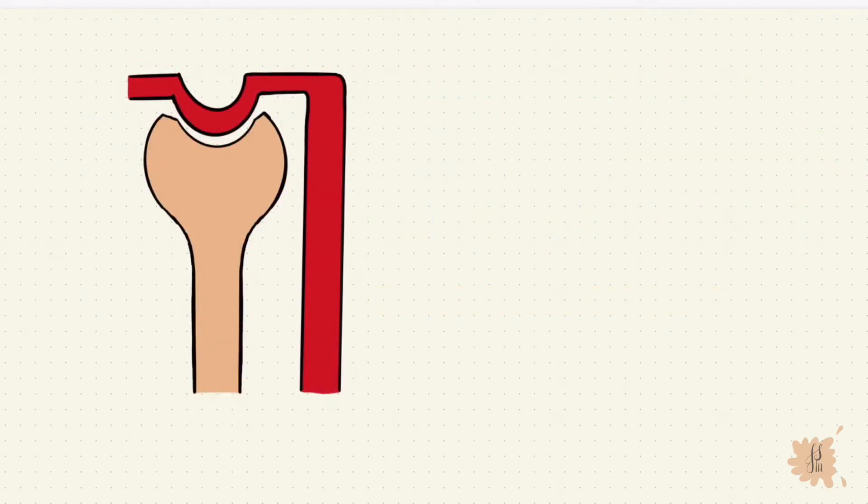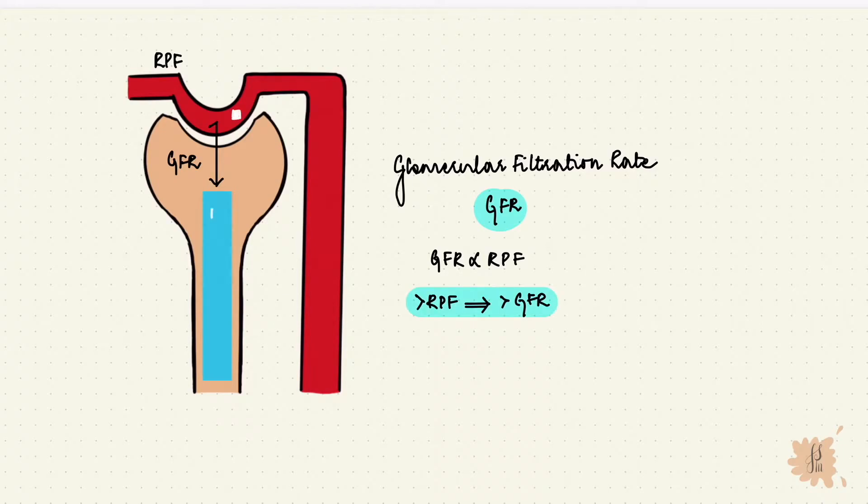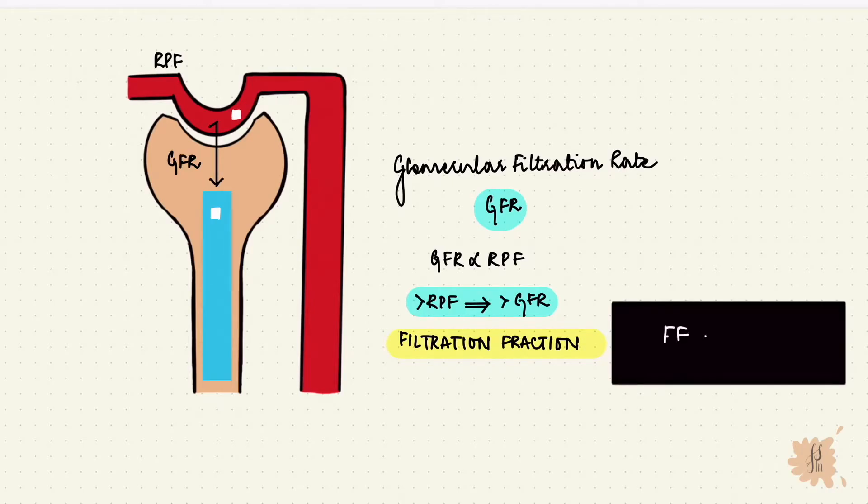The rate at which substances get filtered through the glomerulus is the glomerular filtration rate, or the GFR. The GFR is dependent on the renal plasma flow. More the plasma that flows through the glomerulus, more the GFR. The fraction of plasma that gets filtered is called the filtration fraction. This is given by the ratio of the GFR to the RPF. It's usually 0.2 or 20%, meaning 20% of the renal plasma gets filtered through the glomerulus.